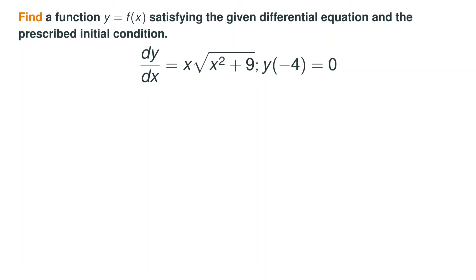In this problem, we are asked to solve the differential equation and specifically to solve for the initial condition that we were given. We see dy/dx — the derivative of y with respect to x — equals x times the square root of x squared plus 9. To begin to solve this differential equation, we will need to integrate both sides.